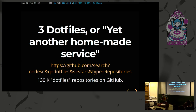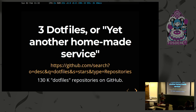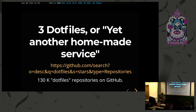I was a bit stressed about this, because no one raising their hand would have been a big flop. So I actually tried this query on GitHub, and it returns some 130,000 dotfiles repositories on GitHub. I think it's insane. If you say there's an average of a thousand lines per repository, that's millions of lines of code used by individual people, but not really put to the common good to be reused and shared.